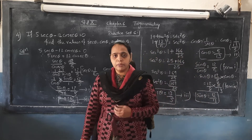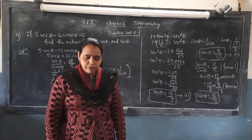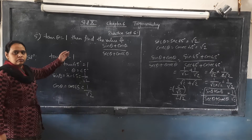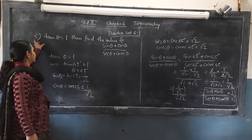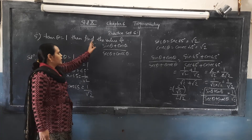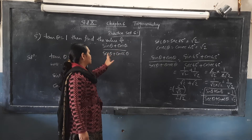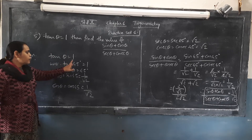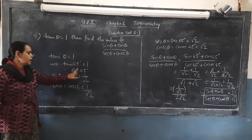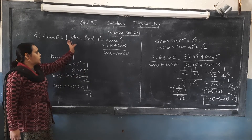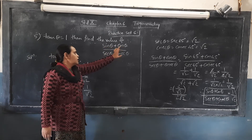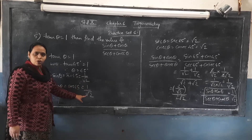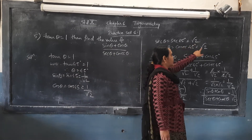Problem 4 is complete. Now we look at problem number 5 of practice set 5.6.1. Given tan θ equals 1, find the value of (sin θ + cos θ) upon (sec θ + cosec θ). Since tan 45° equals 1, therefore θ equals 45°. The standard values: sin 45° equals 1/√2, cos 45° equals 1/√2, sec 45° equals √2, and cosec 45° equals √2.